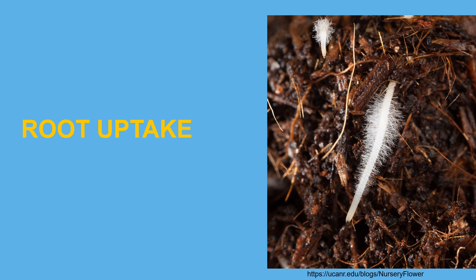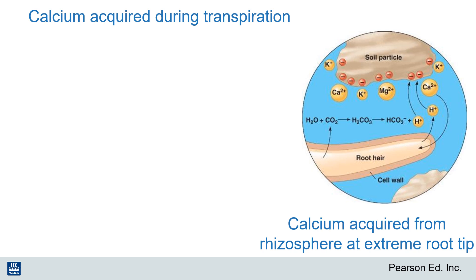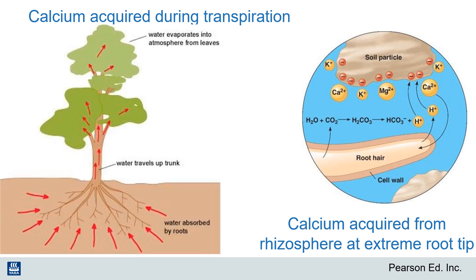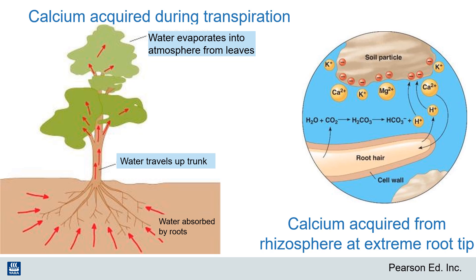Let's begin talking about the roots. Calcium is primarily taken up from the soil solution at the root tips, and then it moves up the plant to the place with the highest water loss, which is usually the leaves at the top of the plant. Calcium is not mobile in the plant and doesn't move in the phloem, so it generally accumulates in plant tissues where water is being lost through transpiration.